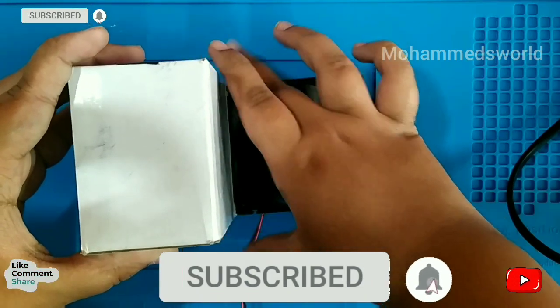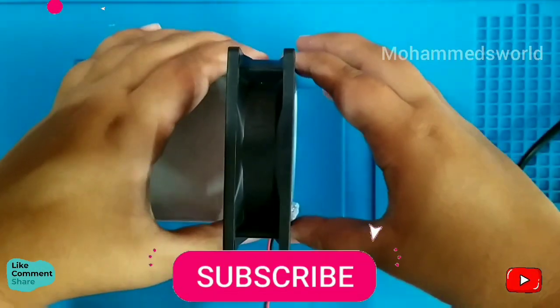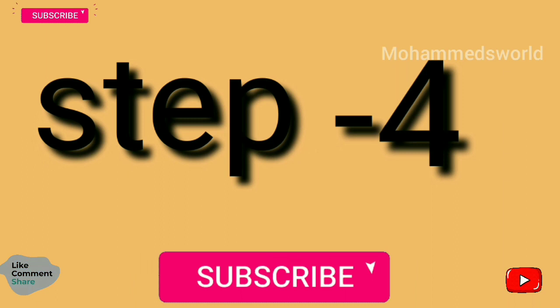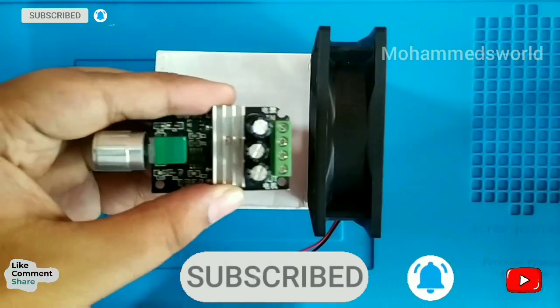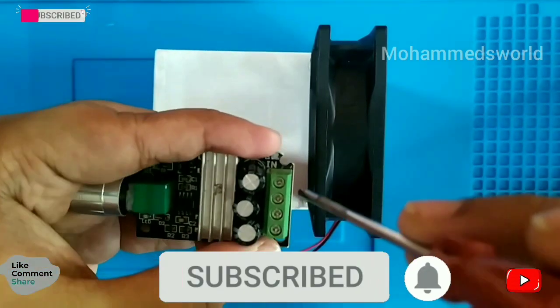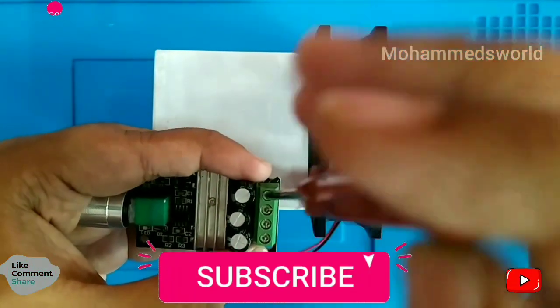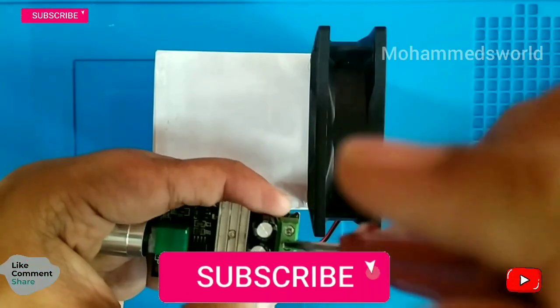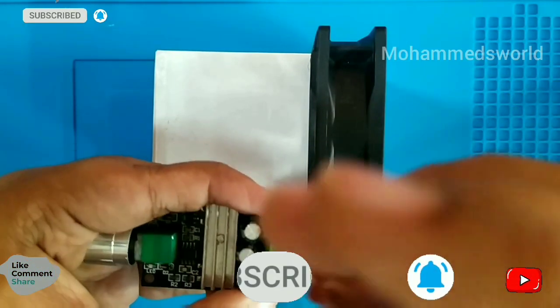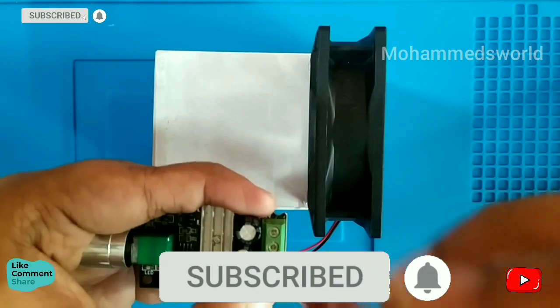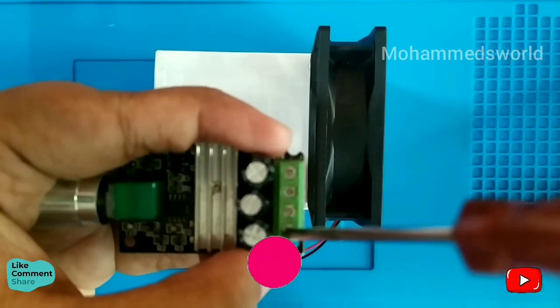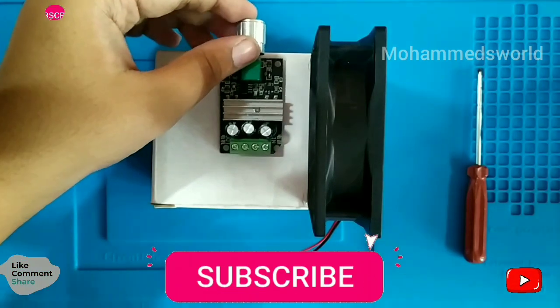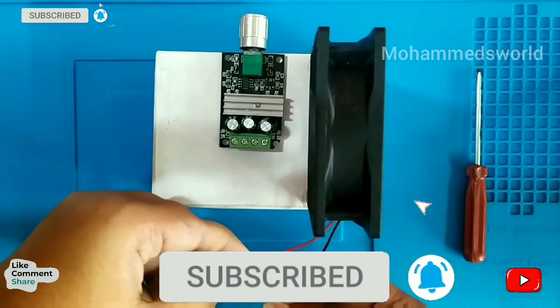Step 4: We are going to give connections for 12 volts DC fan to motor controller. Open screws of motor controller and turn it back side. You can see motor plus and minus. Afterwards, you need to know 12 volts DC fan which is a plus and minus.